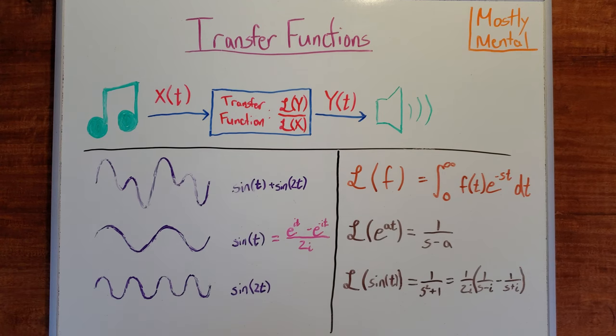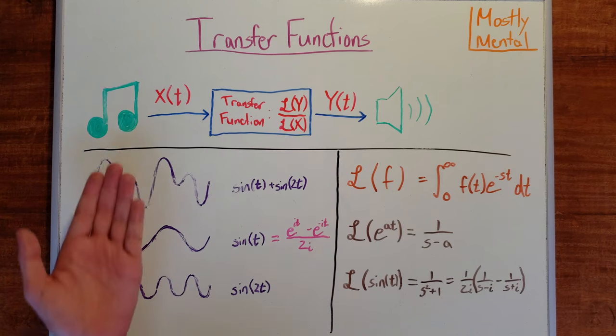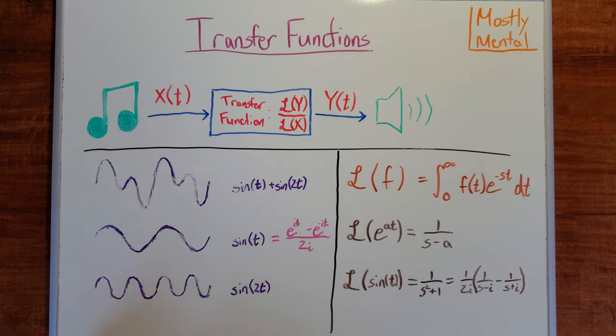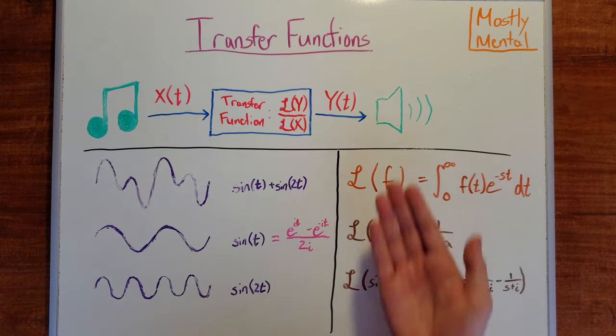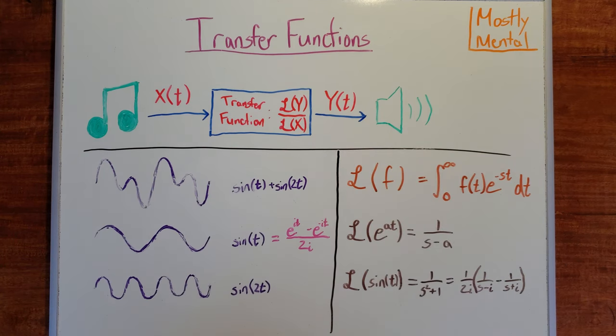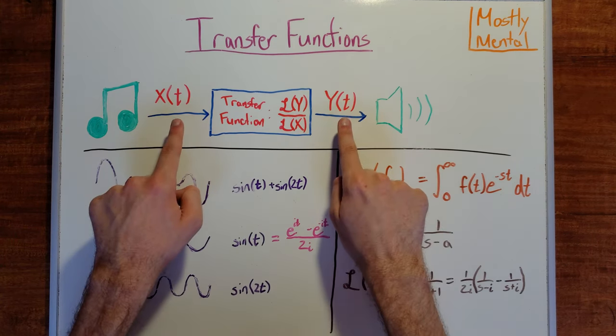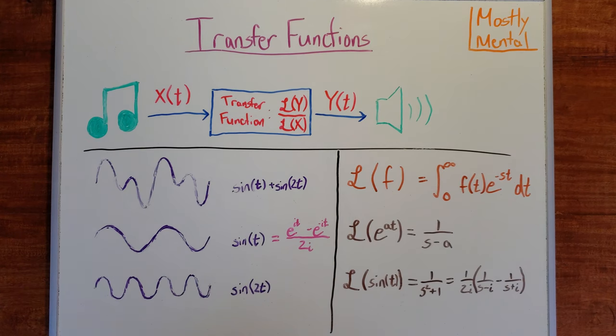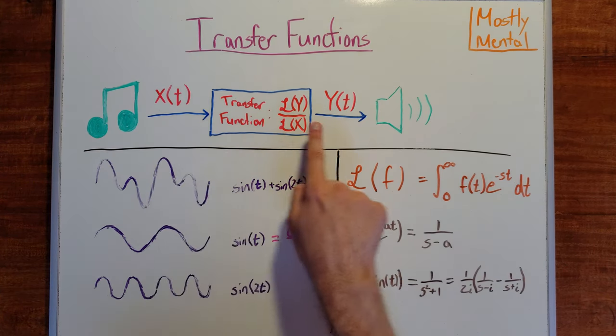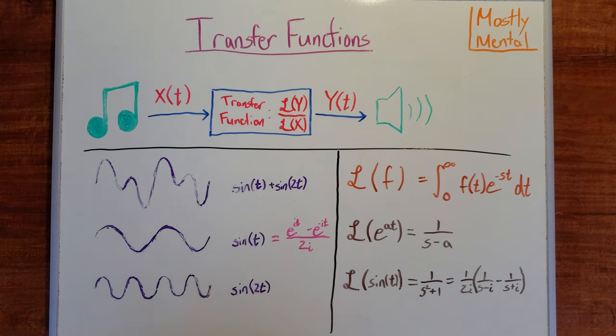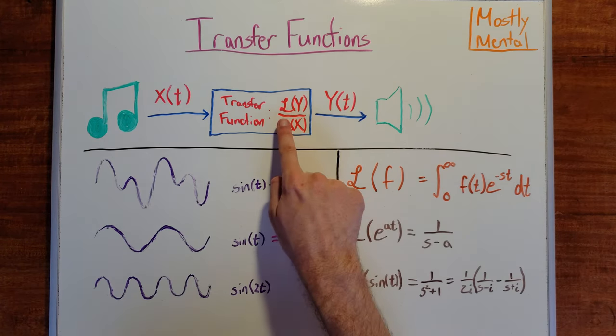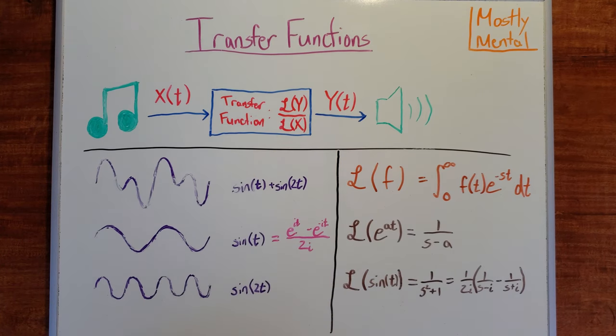In Julian's example, we have an input signal, that's the music being played, and an output signal, the music as you hear it. We'll call those x and y respectively. We want a tool that lets us get from x to y, and it turns out the best tool for the job is what's known as a transfer function. The transfer function is the ratio of the Laplace transforms of y and x. Okay, but what's a Laplace transform?